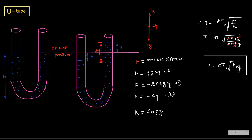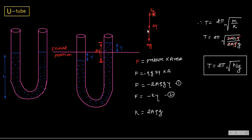Next application: a U-tube with liquid of height h filled from the bottom. When we give oscillations, the liquid goes up in one arm and comes down in the other arm, and keeps oscillating about the mean position. The mean position is the initial equilibrium position. When liquid goes down by y on one side, it goes up by y on the other side.